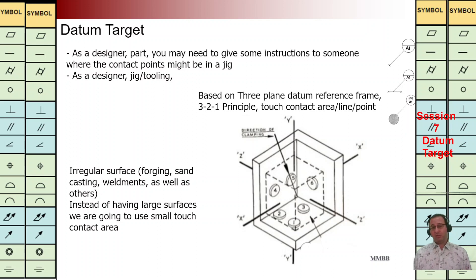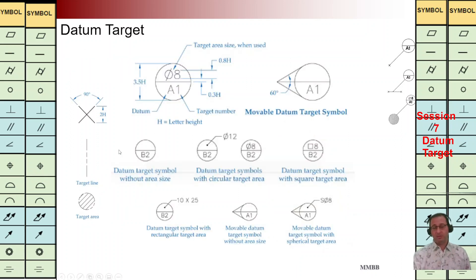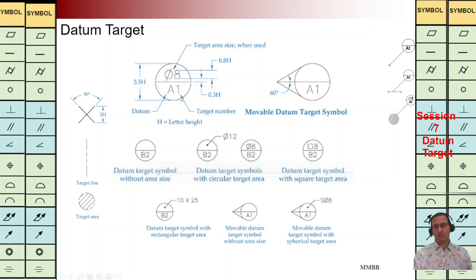The basics of datum target are based on the three-plane datum reference frame — the three-to-one principle. Let's see the symbol of the datum target. We can see it is a circle divided into two parts. In this shape, the size of the contact area is written at the top of the line, and at the bottom we can see it is related to a datum plane — for example A — and the number beside this letter represents the target number.